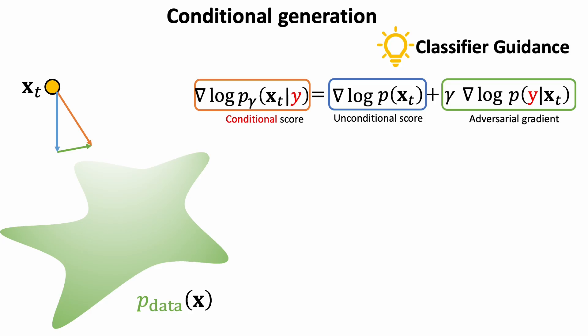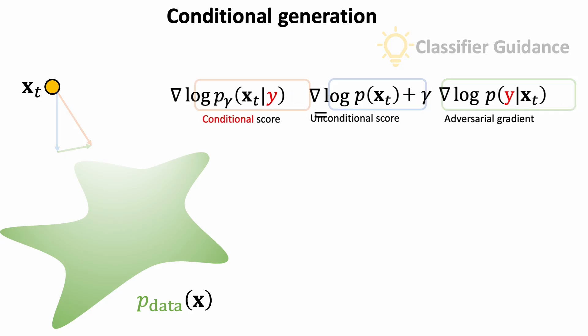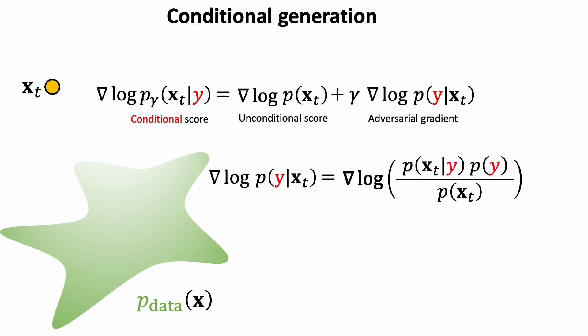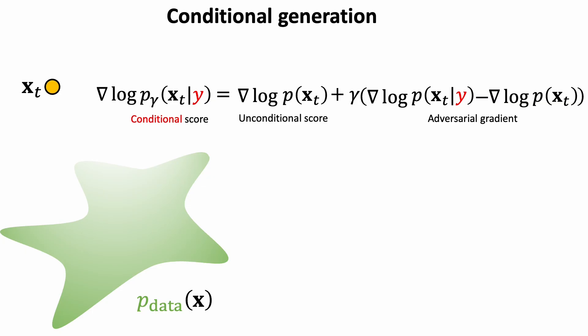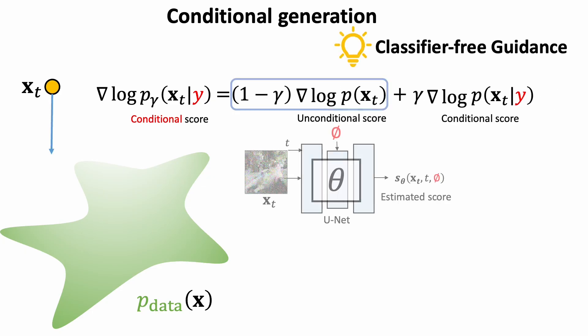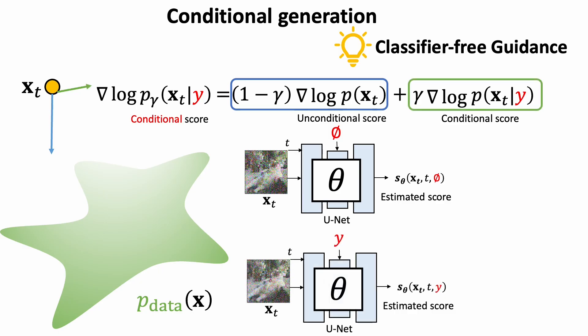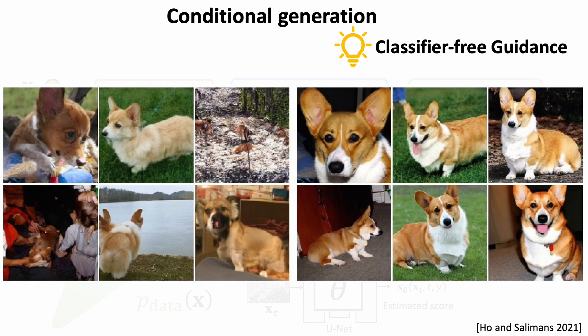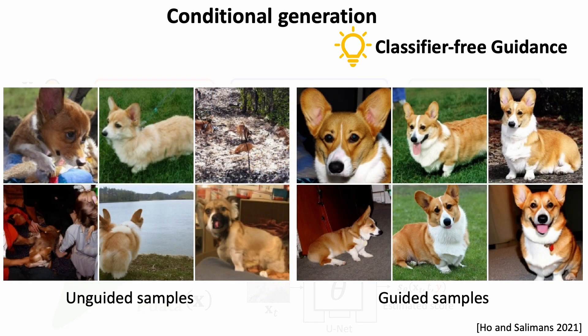By applying the Bayes rules to the second term, we see that it consists of a conditional and an unconditional score. Plugging it back to our equation, we get classifier-free guidance. Training two denoising networks is expensive, so we train a single conditional denoising network, and use no condition to represent the unconditional model. Here are the comparisons between unguided and guided samples with classifier-free guidance.